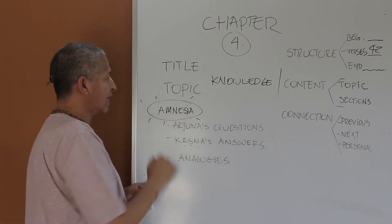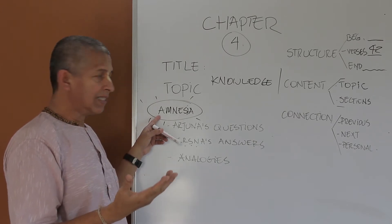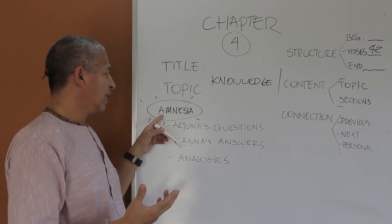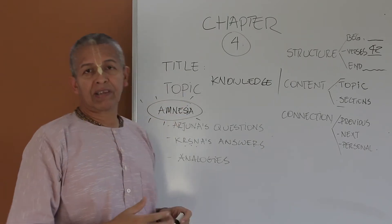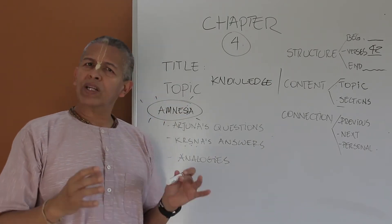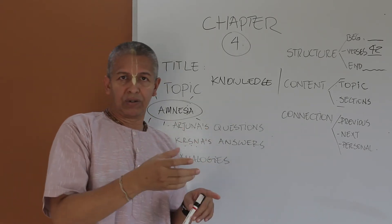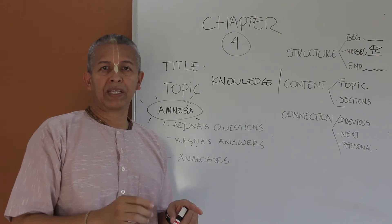An example that we gave is as Srila Prabhupada mentions, when somebody loses his identity, loses his memory, the amnesia. So in this particular chapter Krishna will remind us what do we need to know? What do we need to know in order for us to execute the work that he was recommending in chapter 3?